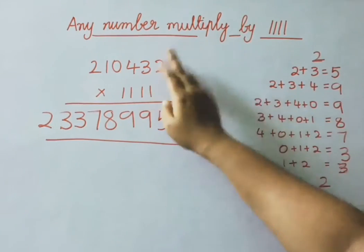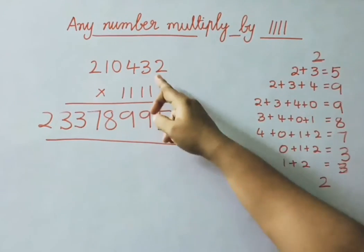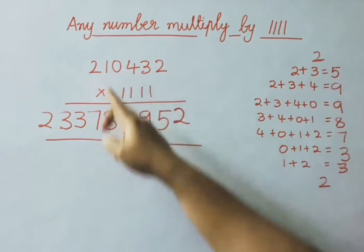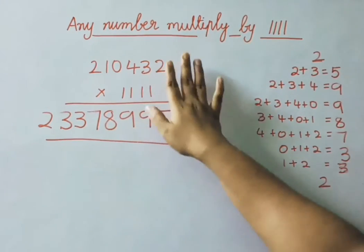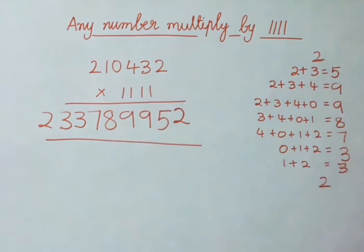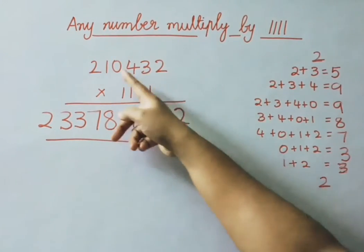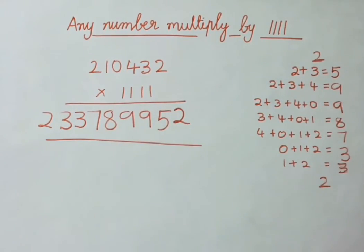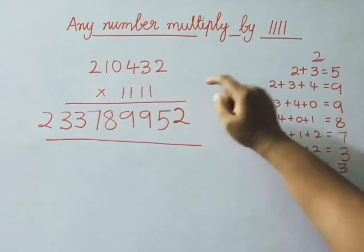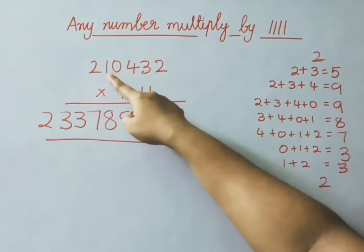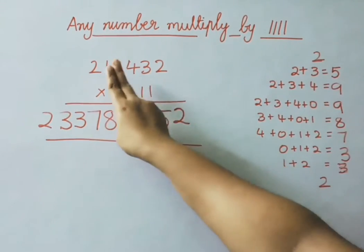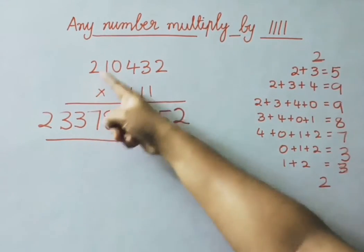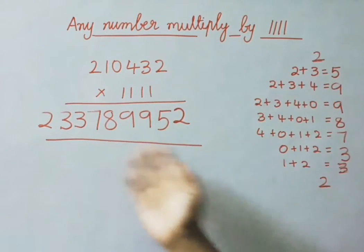Next leave 1 digit, then add 4 digits: 3 plus 4 is 7, 7 plus 0 is 7, 7 plus 1 is 8. Now leave the first 2 digits and add again 4 digits: 4 plus 0 is 4, 4 plus 1 is 5, 5 plus 2 is 7. Now the last 3 digits: 0 plus 1 is 1, 1 plus 2 is 3. Next only 2 digits: 1 plus 2 is 3. And last digit same. So we get the result.